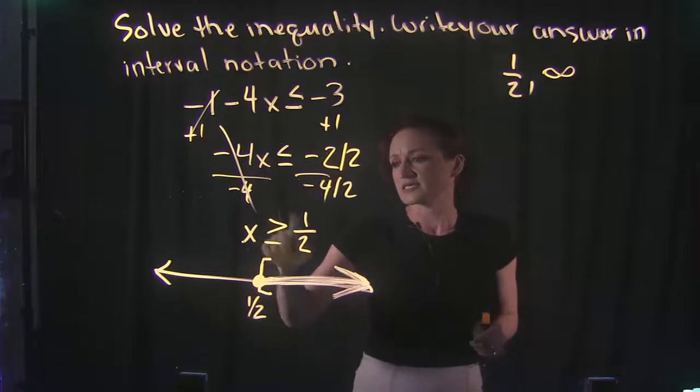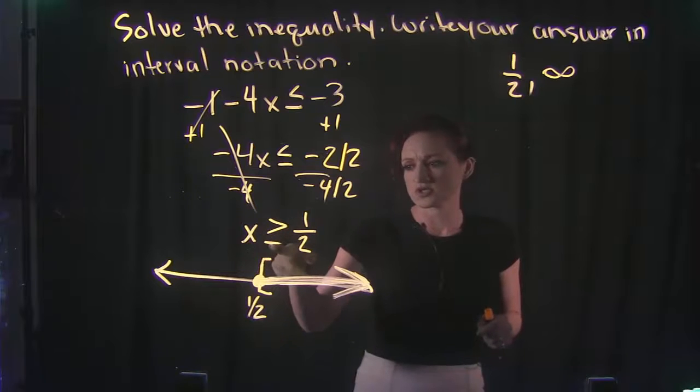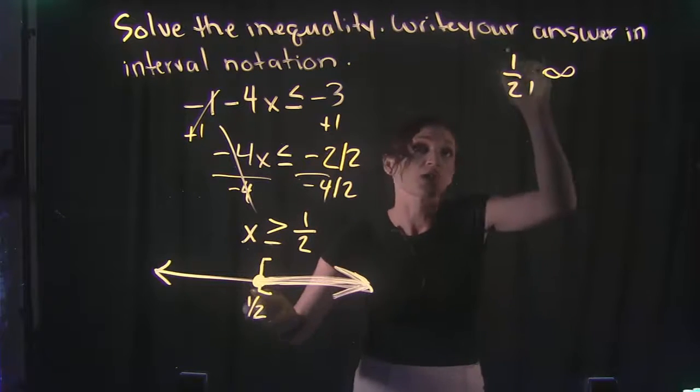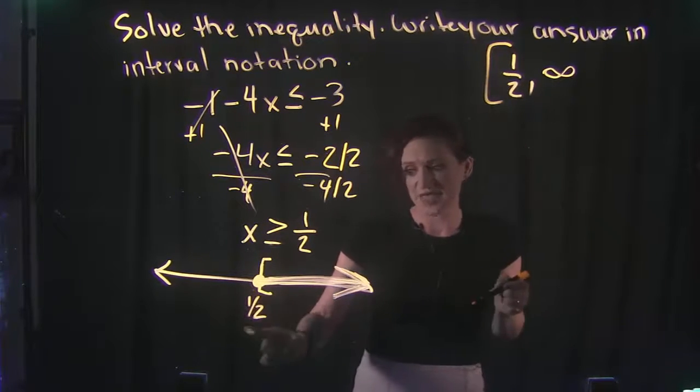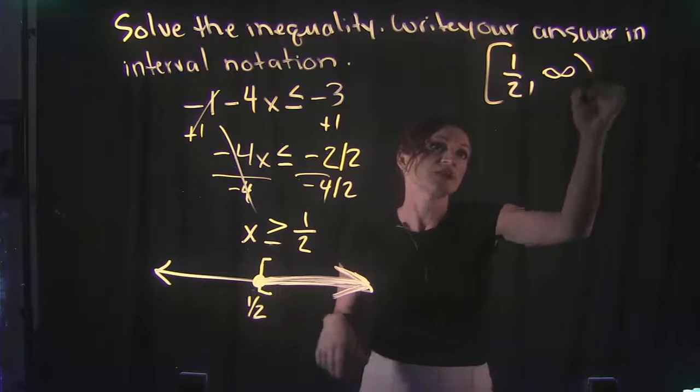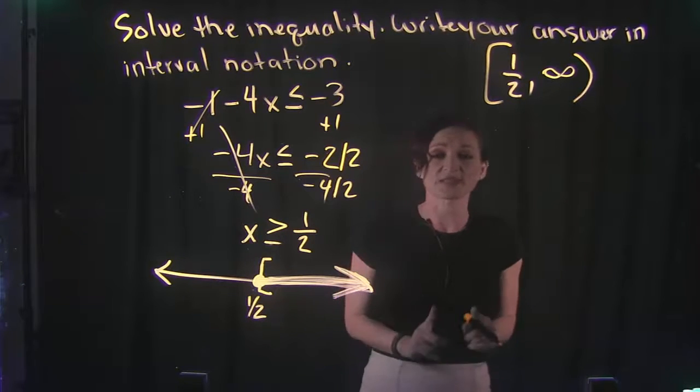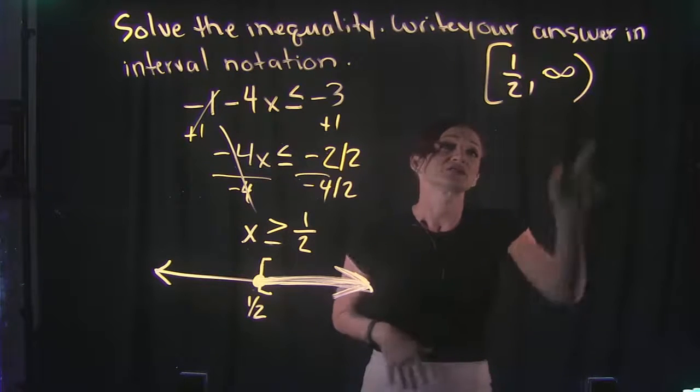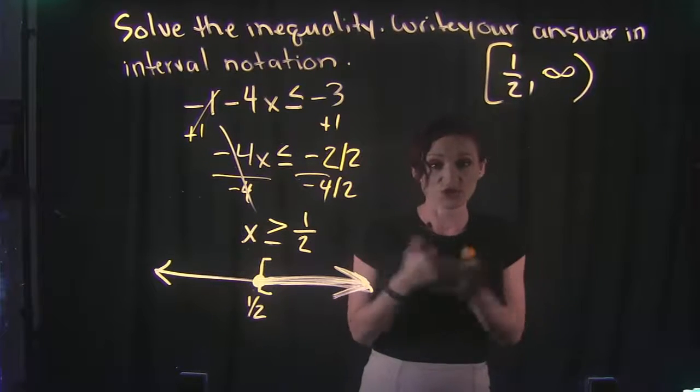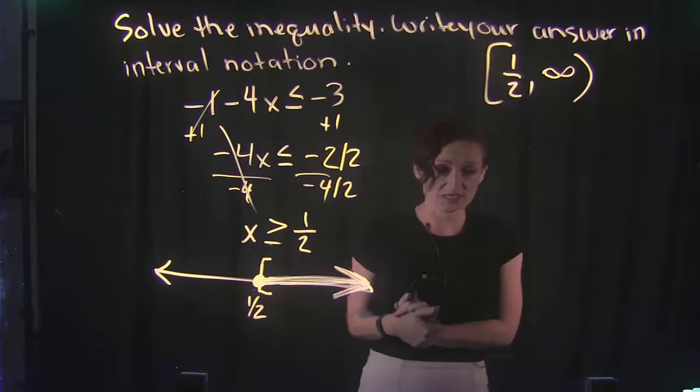Now, because of this symbol greater than or equal to, a greater than or equal to symbol refers to a solid dot or a bracket by that number. And infinity is always going to have a parentheses because you can never get to infinity. So this is what your interval notation is going to look like based off of this solution.